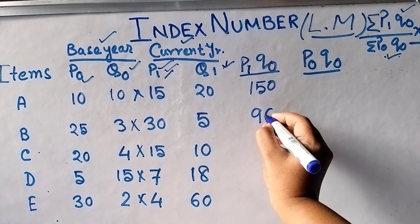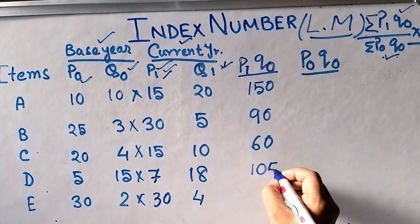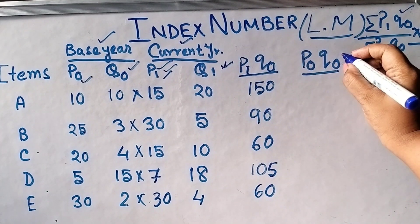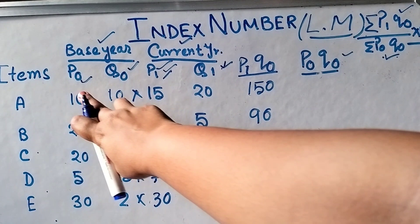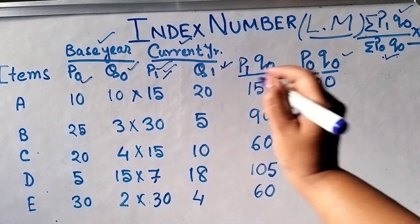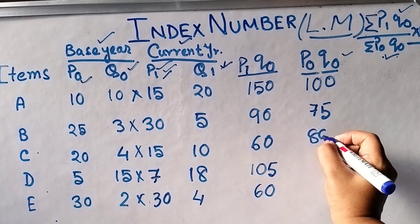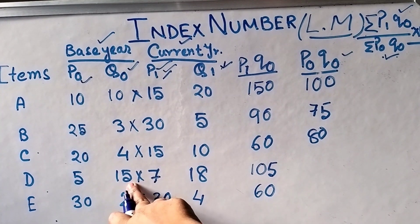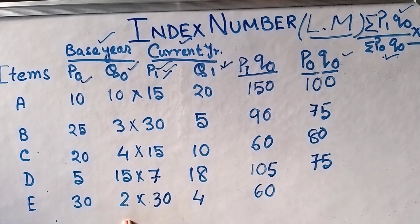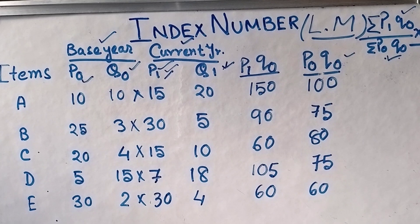Computing the P1Q0 values: the first item gives 150, the second gives 90, the third gives 60, then 15×7 gives 105, and the last one 30×2 gives 60. Now for the P0Q0 column: 10×10 gives 100, 25×8 gives 200, 25×3 gives 75, 20×4 gives 80, 5×15 gives 75, and the last one 30×2 gives 60.